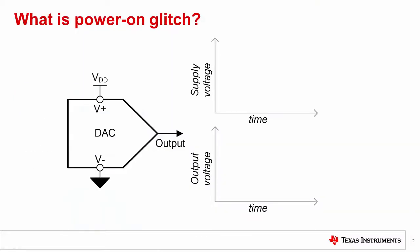To get started, we need to answer the question: what is Power-on Glitch? We usually define Power-on Glitch as an unwanted transient on a Precision DAC output that occurs while the supplies are ramping to their final values at startup. In this image, we can see that as the supply voltage ramps, the output voltage ramps as well.